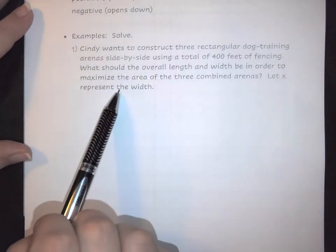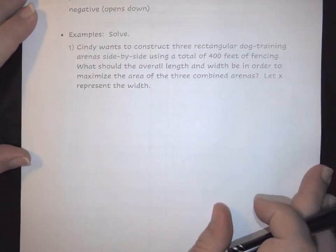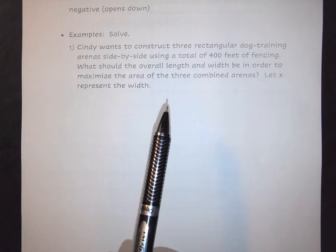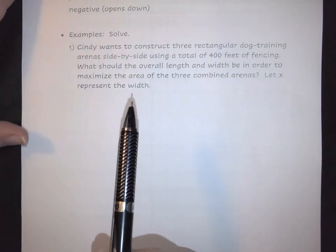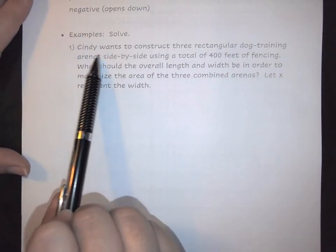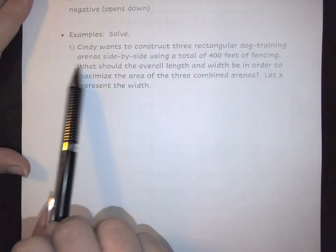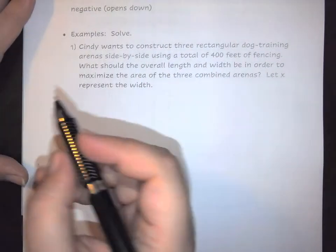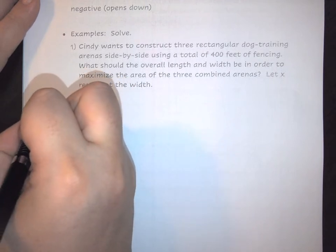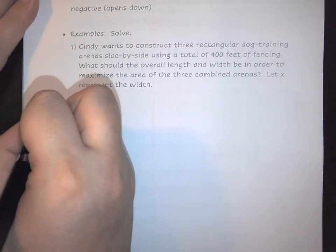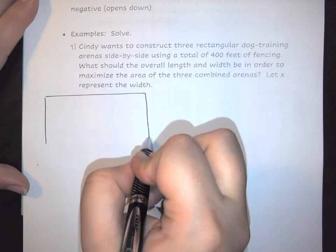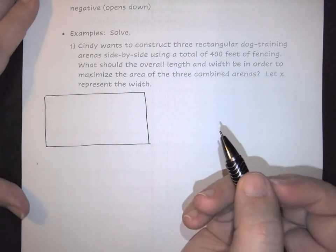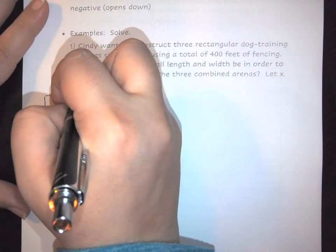So here notice we have this big old paragraph, and when you read word problems of this size you want to do it part by part and pull out the information contained within each tiny piece. Cindy wants to construct three rectangular dog training arenas side by side using a total of 400 feet of fencing. So right there we can draw ourselves a picture. We want a rectangle dog training area and we want three of them, so we're going to split this into three.